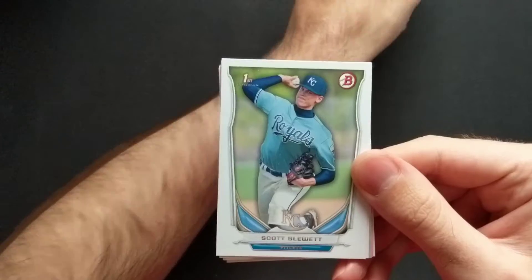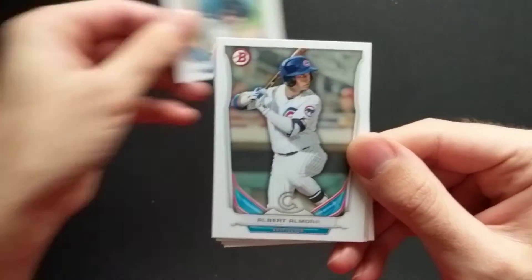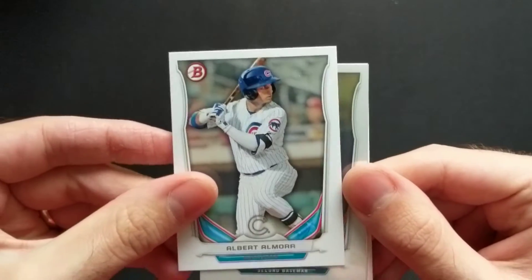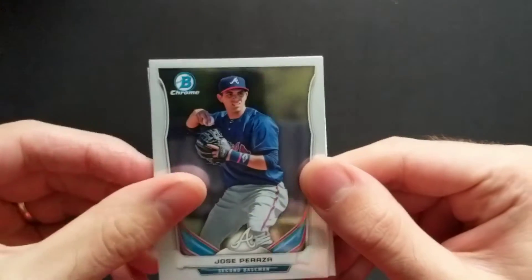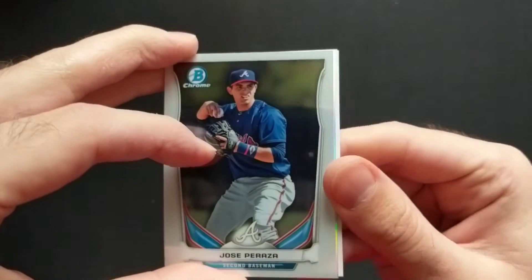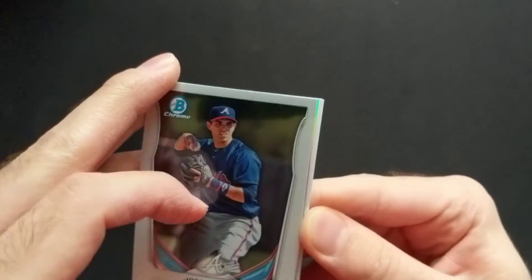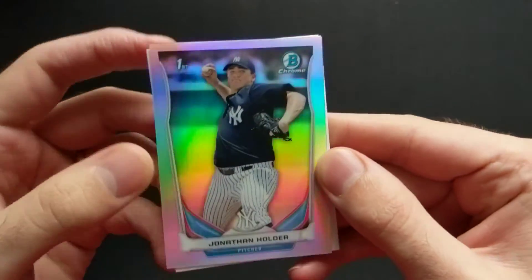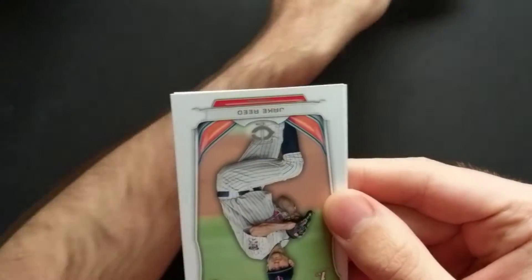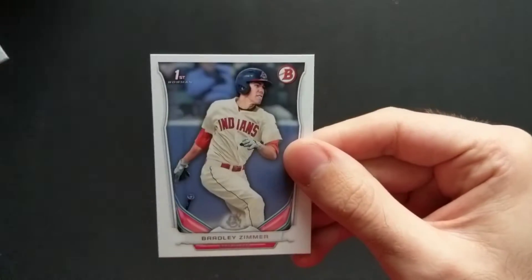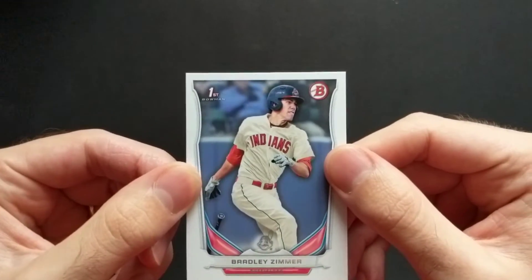We've got a first of Scott Blew, Albert Almora, Jose Parasa on the chrome and a refractor I believe. Jonathan Holder of the Yankees. We've got Jake Reed first and Bradley Zimmer. Very nice, some cool first guys there.